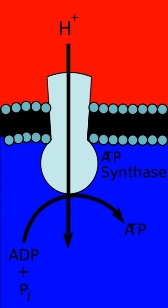An electron transport chain is a series of complexes that transfer electrons from electron donors to electron acceptors via redox reactions, both reduction and oxidation occurring simultaneously, and couples this electron transfer with the transfer of protons across a membrane. This creates an electrochemical proton gradient that drives the synthesis of adenosine triphosphate, a molecule that stores energy chemically in the form of highly strained bonds.